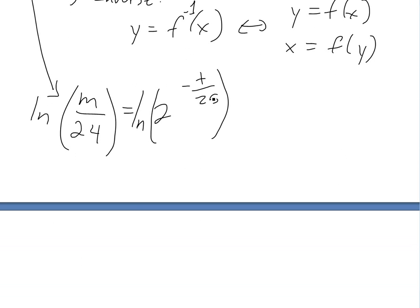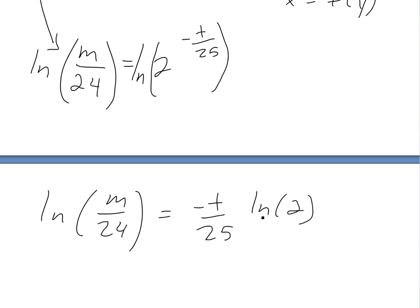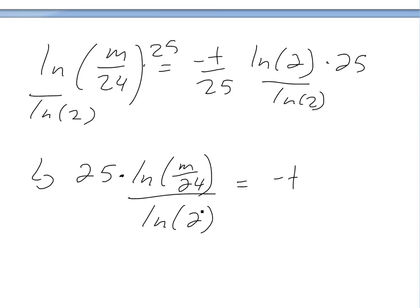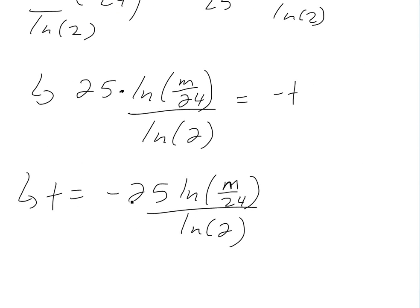We take the natural log of both sides, and recall from logarithmic properties that the exponent comes down. So ln(m/24) equals (-t/25) times ln(2). We can solve easily for t by rearranging: multiply both sides by 25 and divide both sides by ln(2). This gives us t equals -25 times ln(m/24) divided by ln(2). This is our equation for t.